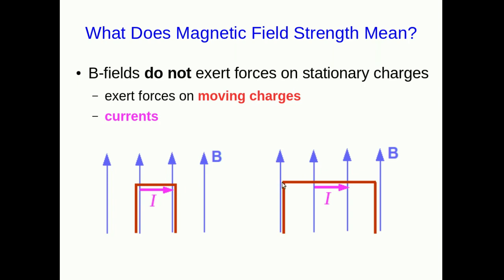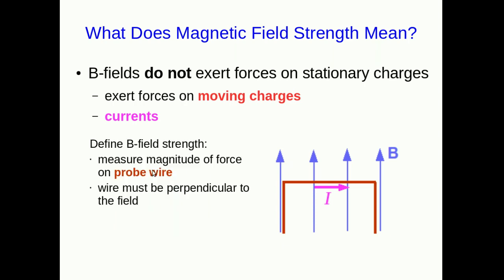Also, if we use a longer segment of wire that's perpendicular to the field, we find that the force is also proportional to the wire length. And so now we have a definition of B field strength. We can measure the magnitude of the force on a probe wire, not a probe charge, but a probe wire. It has to be perpendicular to the field.